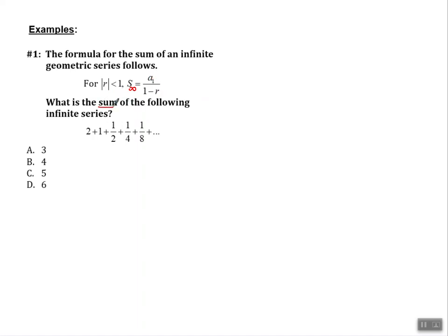It says what is the sum of the following infinite series? So we have all of these terms and they go on forever. Well to be able to use this formula, I need a sub one. And that's as simple as looking at the first term, that's two. I also need the common ratio which is r. And r is what we multiply to get from one term to the next. And we are multiplying by one half.